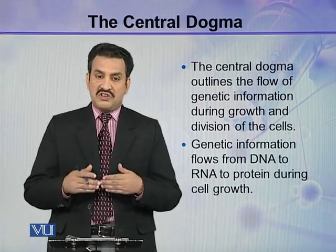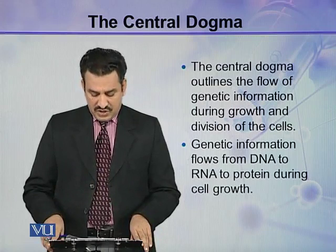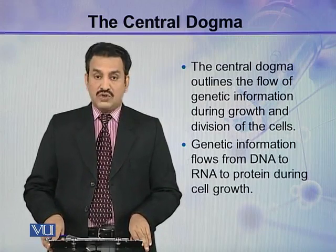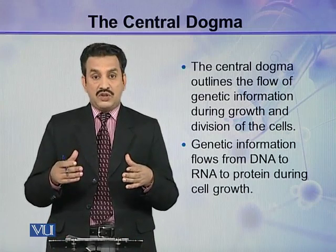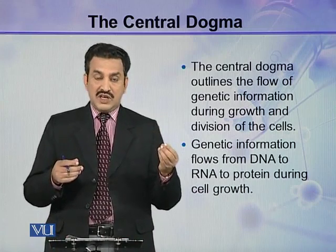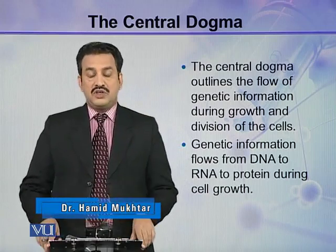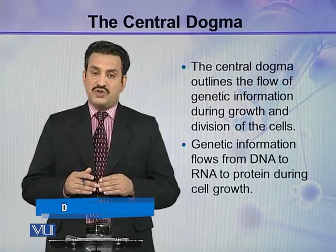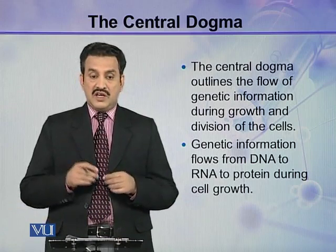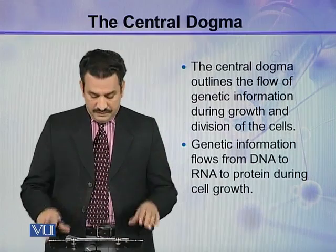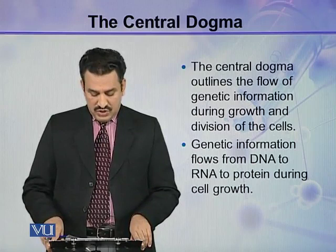The central dogma outlines the flow of genetic information during growth and division of cells. When the cell is growing it needs proteins — how is the information coded in DNA transferred for the synthesis of proteins? Similarly, during cell division, how is the information stored in DNA copied to the new cell? Genetic information flows from DNA to RNA to proteins during cell growth.